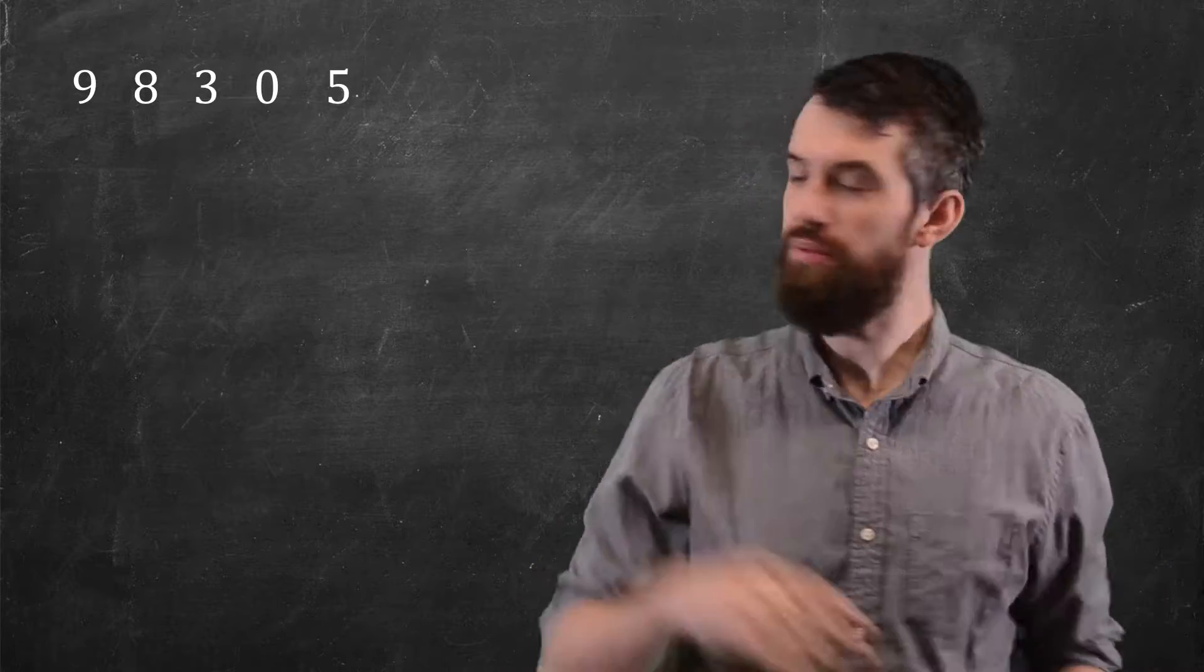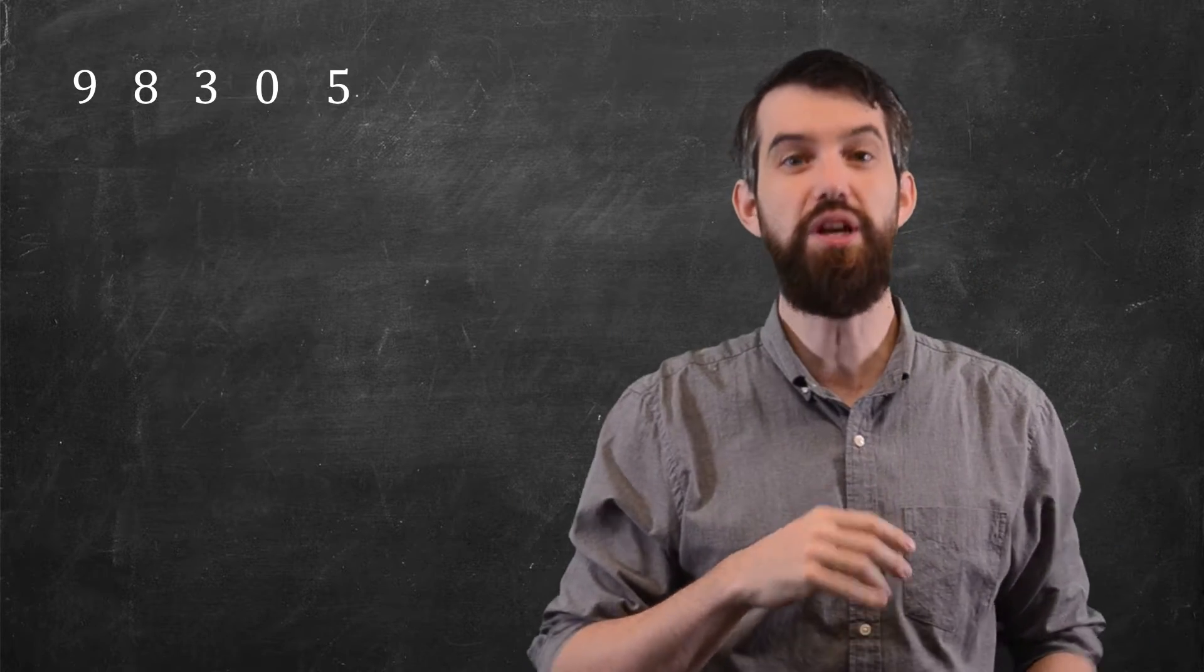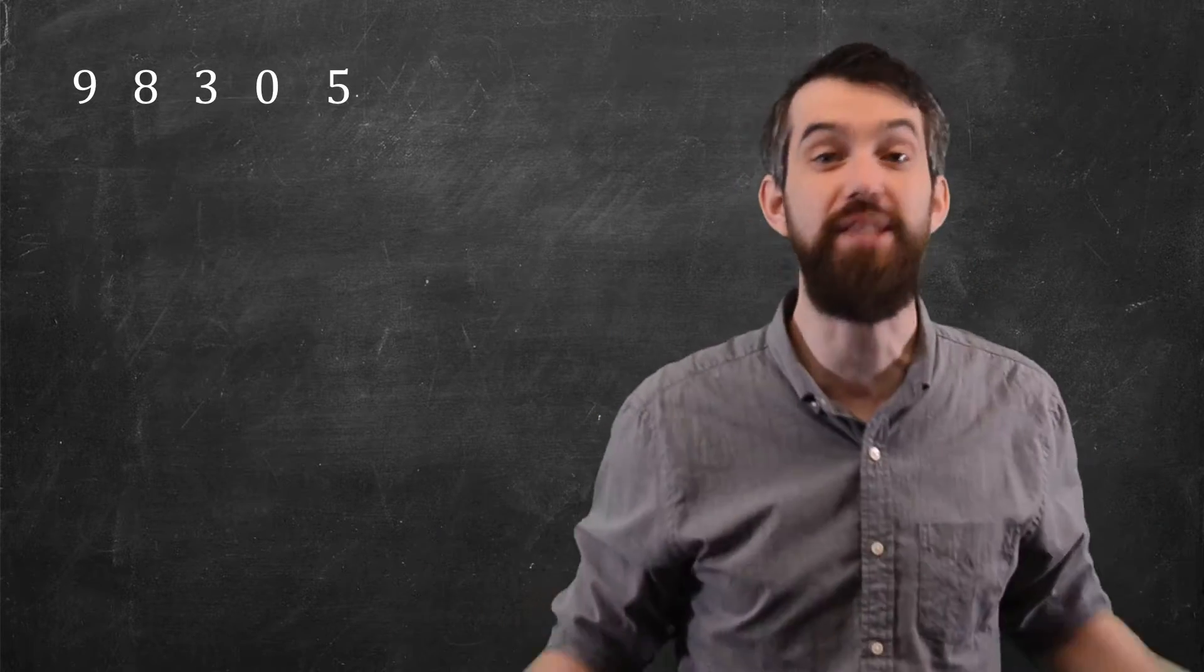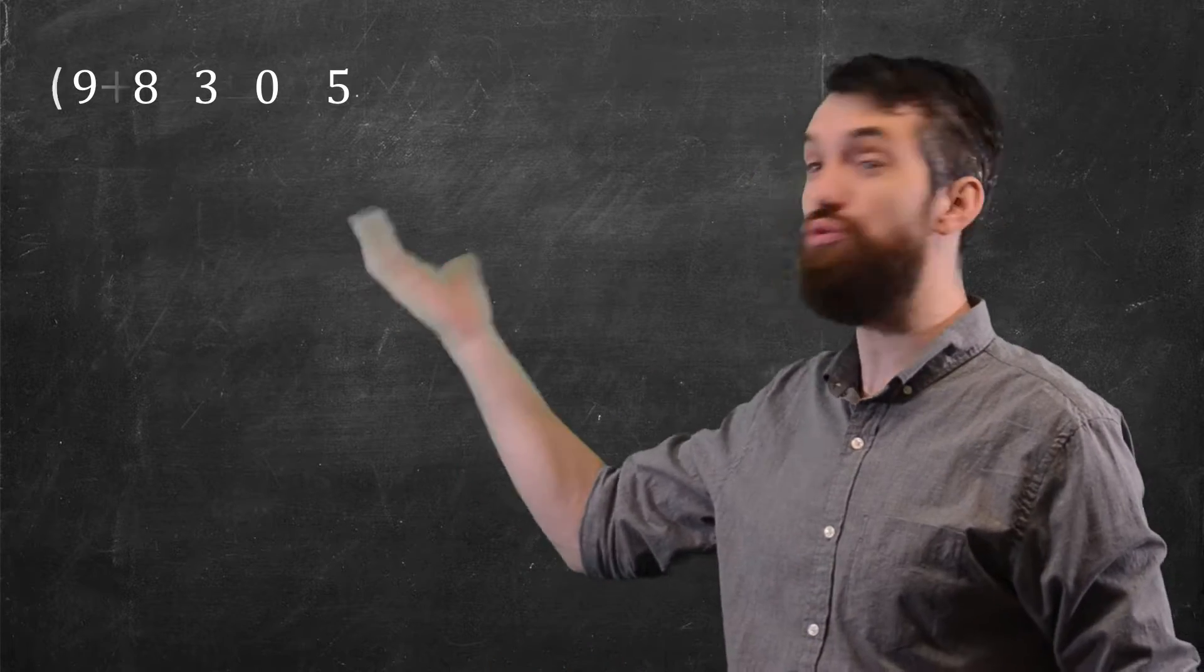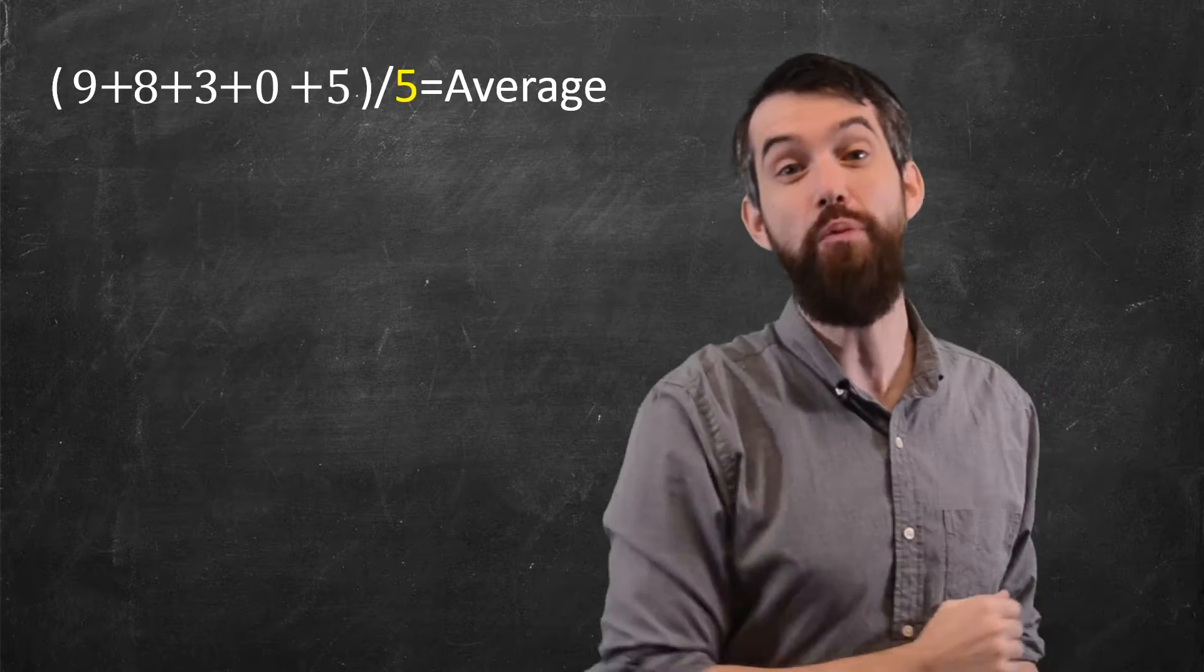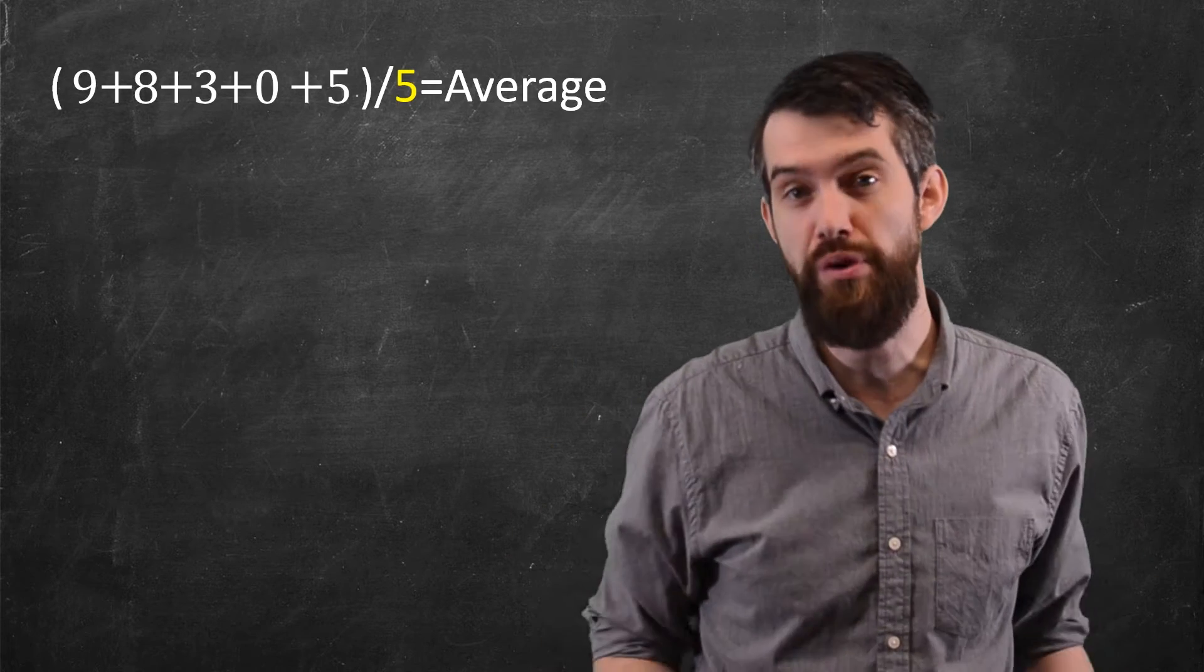If I give you a list of numbers, like 9, 8, 3, 0, 5, the computation of the average is very simple. You simply take those numbers, add them all up, divide out by the number of them, divide out by 5, and that gives you your average.